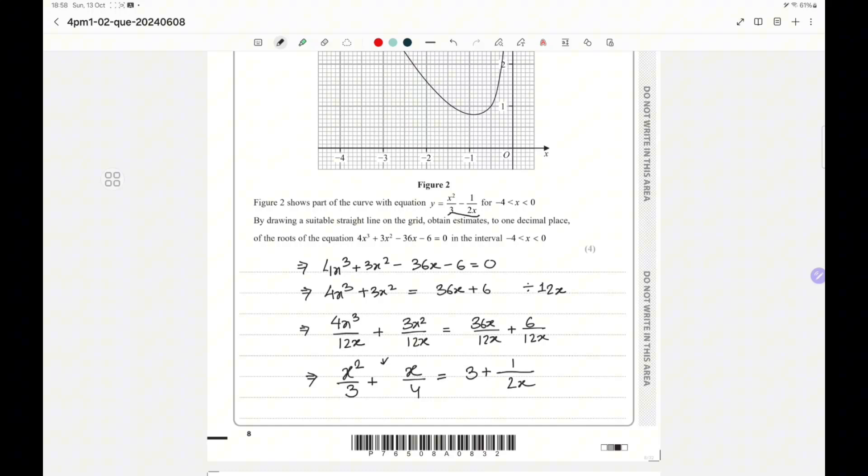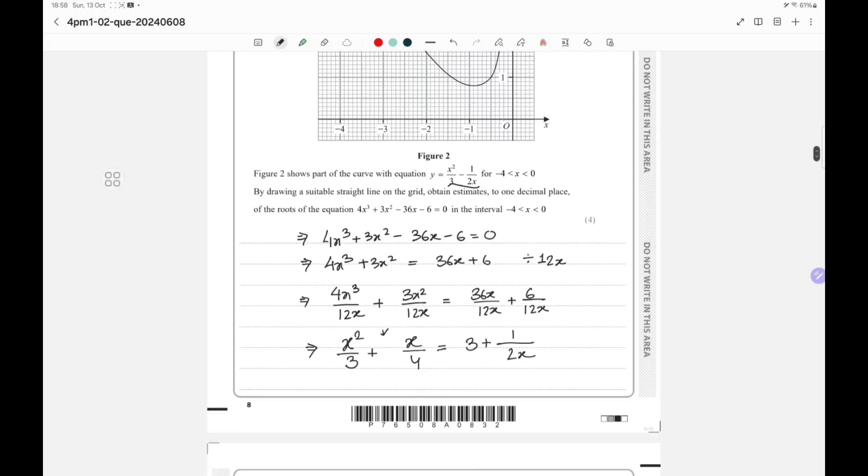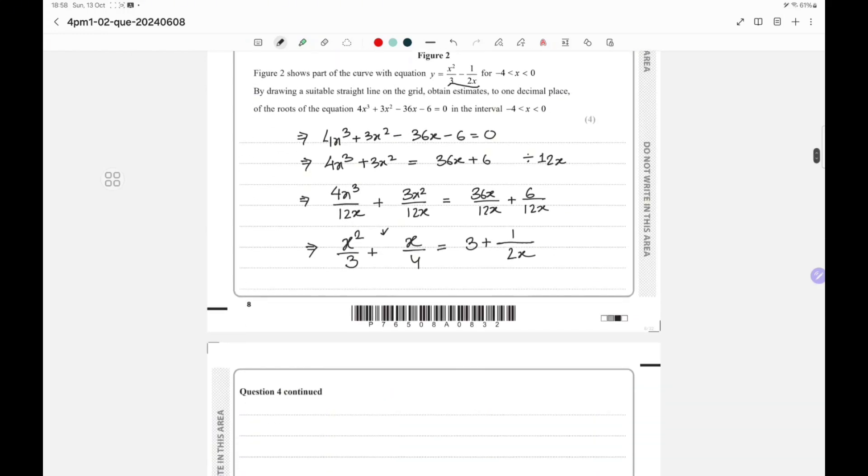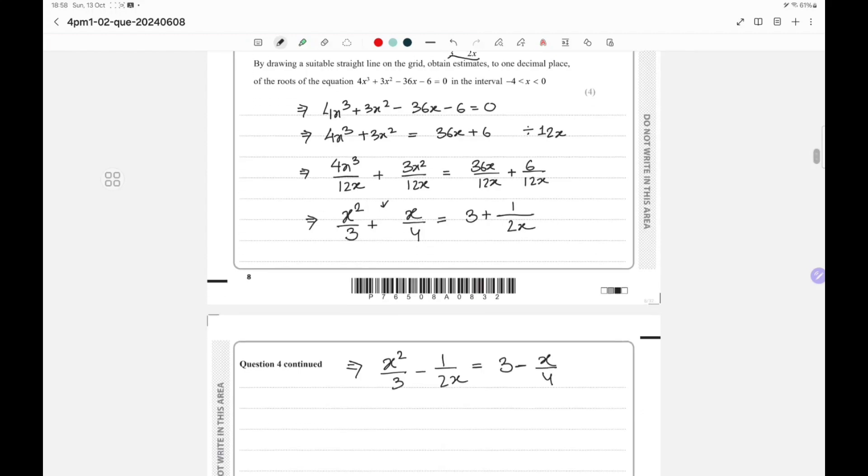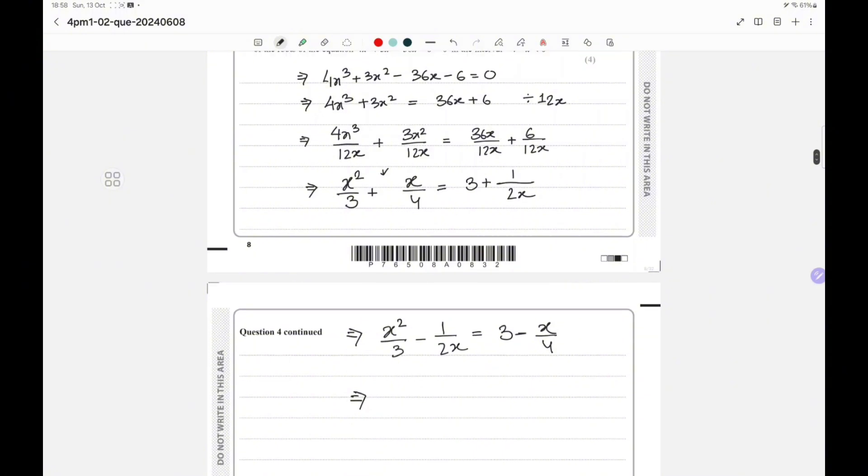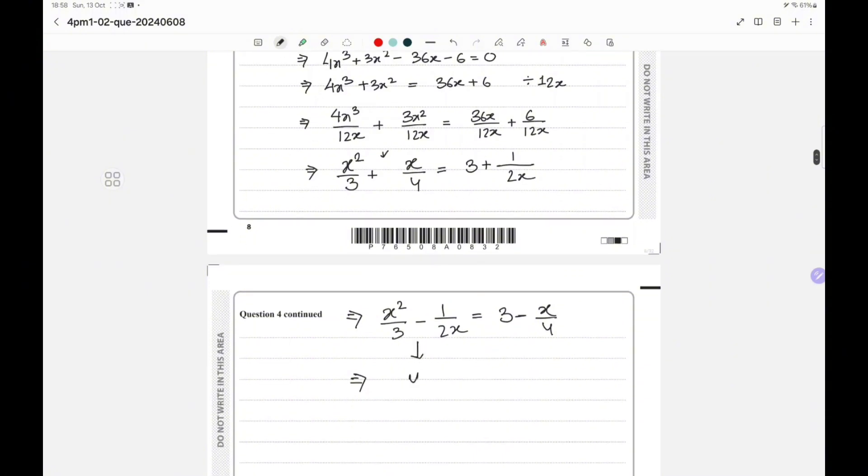Now I need to have this thing over here. If you observe, I think the best way is if I switch sides of these two things, so x squared by 3 minus 1 by 2x equals 3 minus x by 4. This is our y equals 3 minus x by 4, and this is the straight line that we need to draw on this grid.